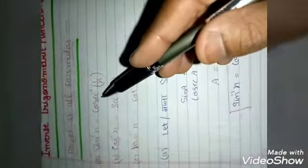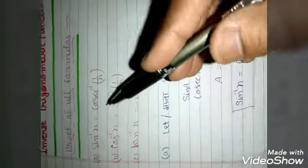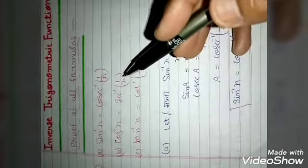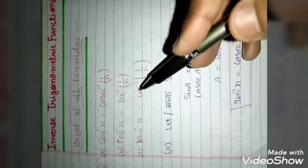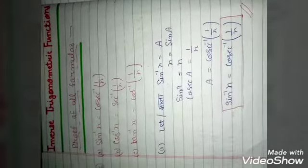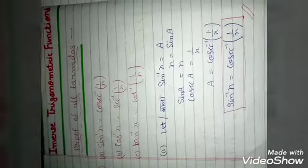सबसे पहले formula: sin⁻¹x = cosec⁻¹(1/x), cosec⁻¹x = sec⁻¹(1/x), tan⁻¹x = cot⁻¹(1/x)। इन तीनों formula का proof एक ही base पर है। मुख्यतः हम लोग sin, cos, tan के लिए ही पढ़ते हैं, बाकी को भी इसी तरीके से solve करते हैं।